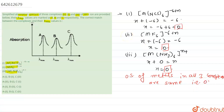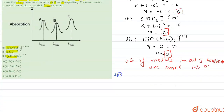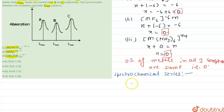Now we check the field strength of the ligands using the spectrochemical series. According to the spectrochemical series, ammonia is a strong ligand and therefore has maximum field strength, greater than thiocyanate, which in turn has more field strength than the fluoride ligand. This gives us the order of field strength of the ligands.